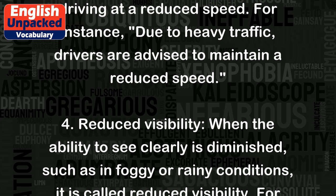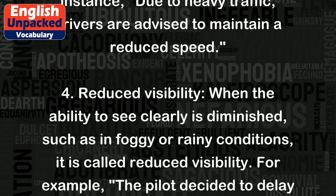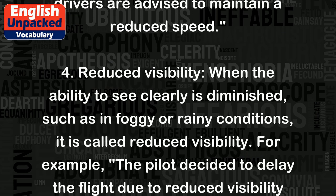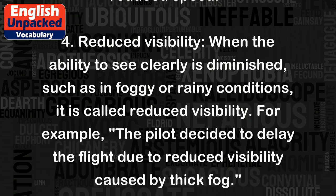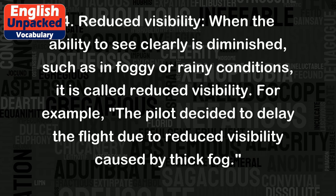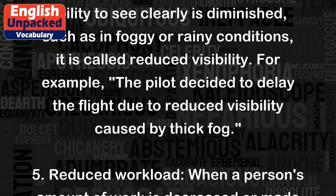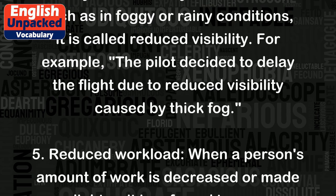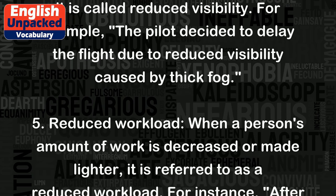4. Reduced visibility: when the ability to see clearly is diminished, such as in foggy or rainy conditions, it is called reduced visibility. For example, the pilot decided to delay the flight due to reduced visibility caused by thick fog.